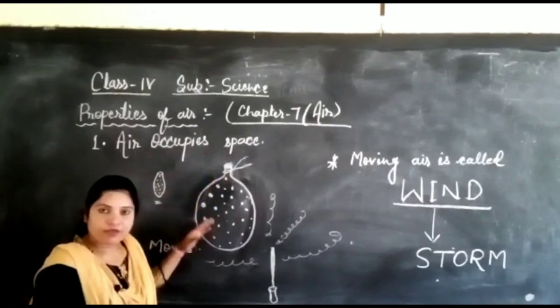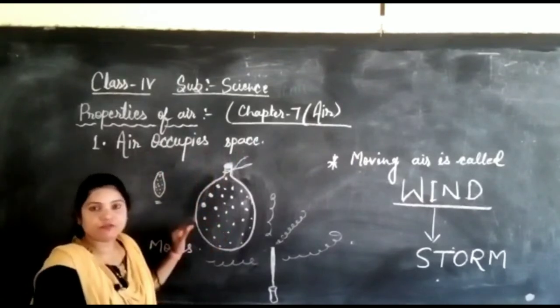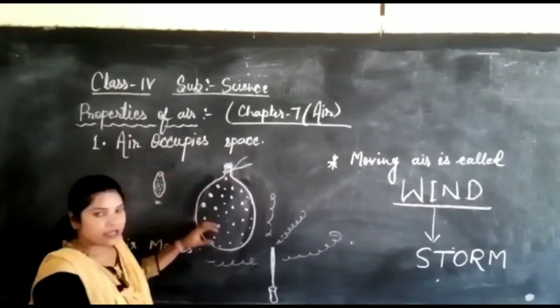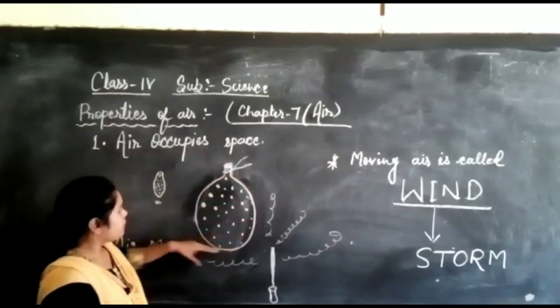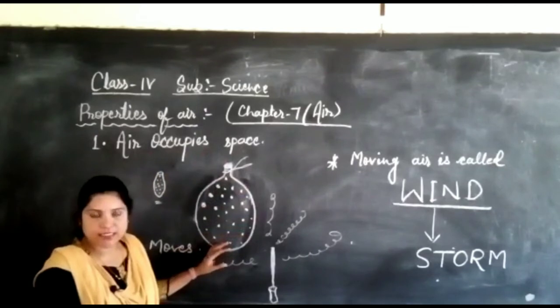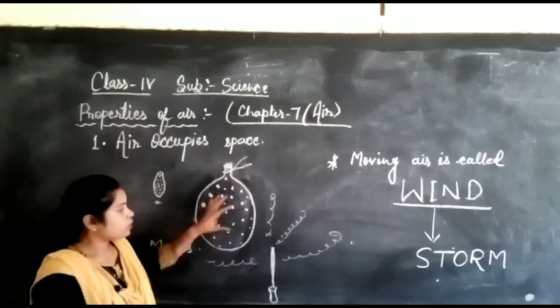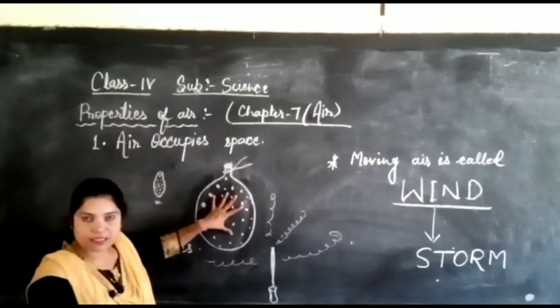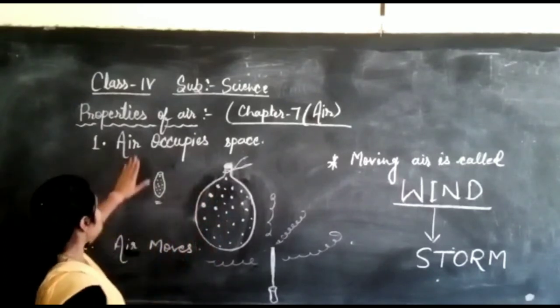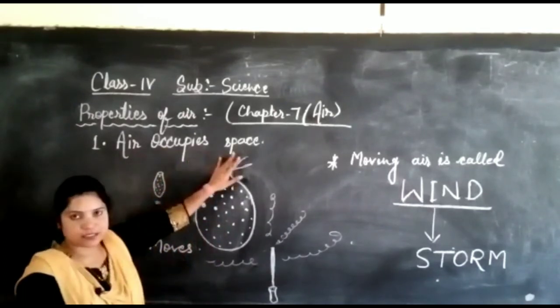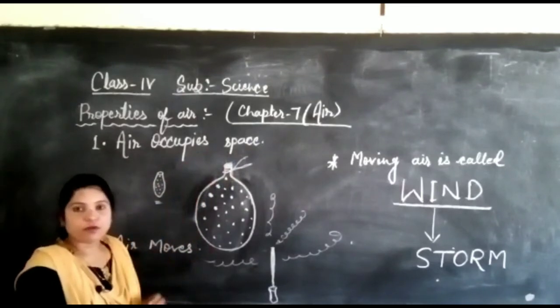So in this way we have seen air occupies space. We can very easily understand when we blow air into this balloon, the air increases its size and it means air occupies the space of the balloon. So in this way we have seen air occupies space. This is the first property of air.